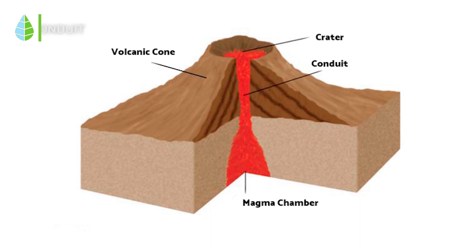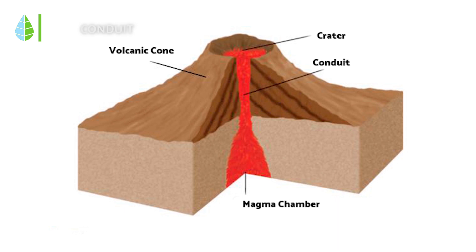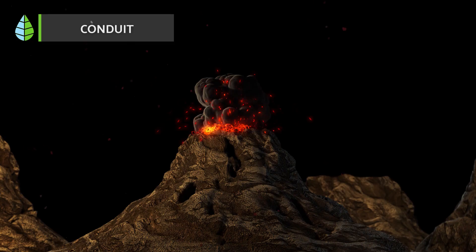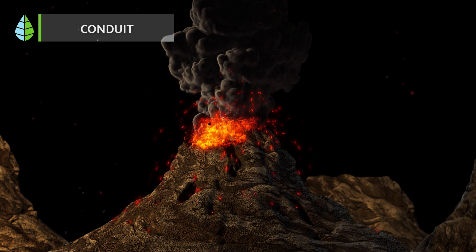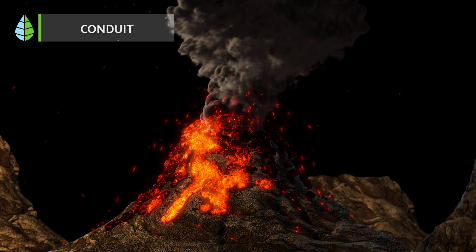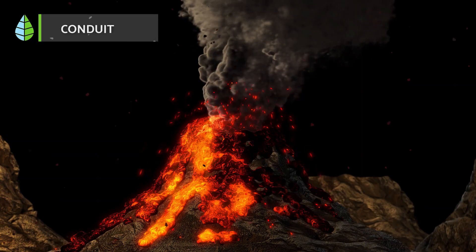Conduit. The conduit is the pathway that links the magma chamber to the outside world. When a volcano erupts, magma flows upward through this conduit. The intense pressure created by the rising magma can cause the chimney to rupture, resulting in fragments of rock being carried along during the eruption.